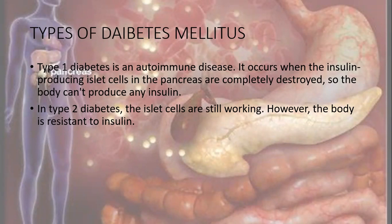In type 2 diabetes, the islet cells are still working; however, the body is resistant to insulin. To discriminate between the two types: in type 1 diabetes, the age of onset is usually childhood or puberty, whereas in type 2 diabetes, the age is mostly over 35. Regarding nutritional status, in type 1 diabetes the patient is commonly undernourished, whereas in type 2 diabetes the patient is typically obese.